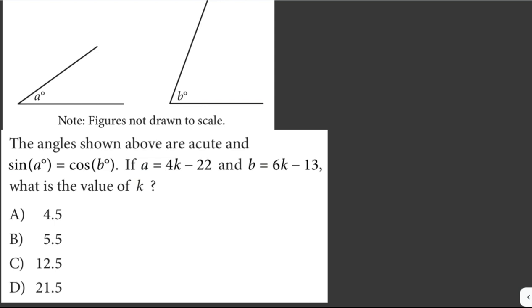Let's solve another problem. The angles shown are acute and sine of a degrees is equal to cosine of b degrees. If a equals 4k minus 22 and b equals 6k minus 13, what is the value of k? Since the angles are acute and sine of a degrees equals cosine of b degrees, this follows the complementary angle property of sines and cosines, which says that the sine of an angle is equal to the cosine of its complementary angle, and the co-function of complementary angles are equal.